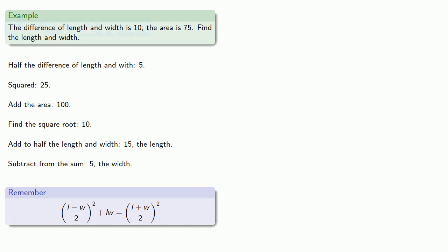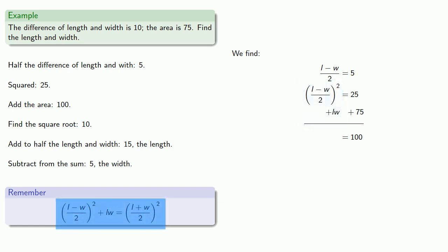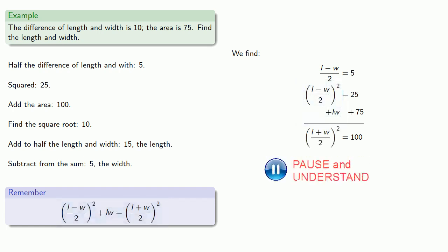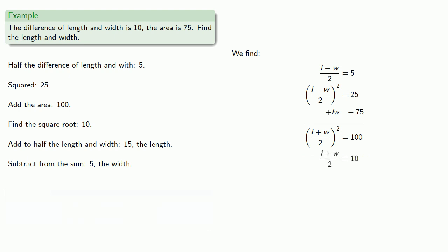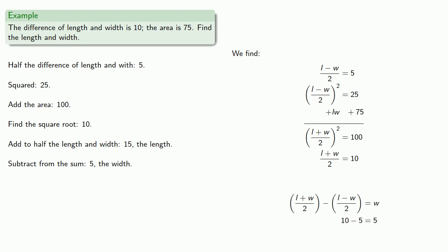We have the difference of length and width, so half of that gets us 5. Squaring gives 25. Add the area. That sum is 100, but it's also the square of half the difference plus the area, which our identity tells us is the square of half the sum. When we find the square root, we have half the difference and half the sum. So if we add them, we get the length, and if we subtract them, we find the width.